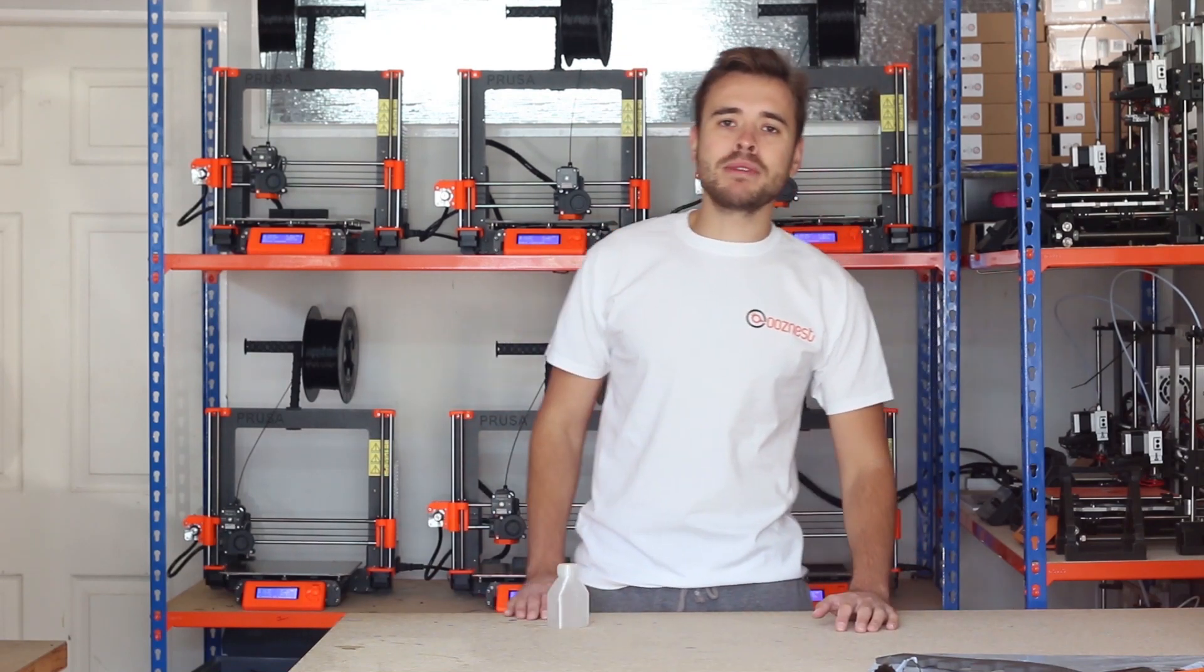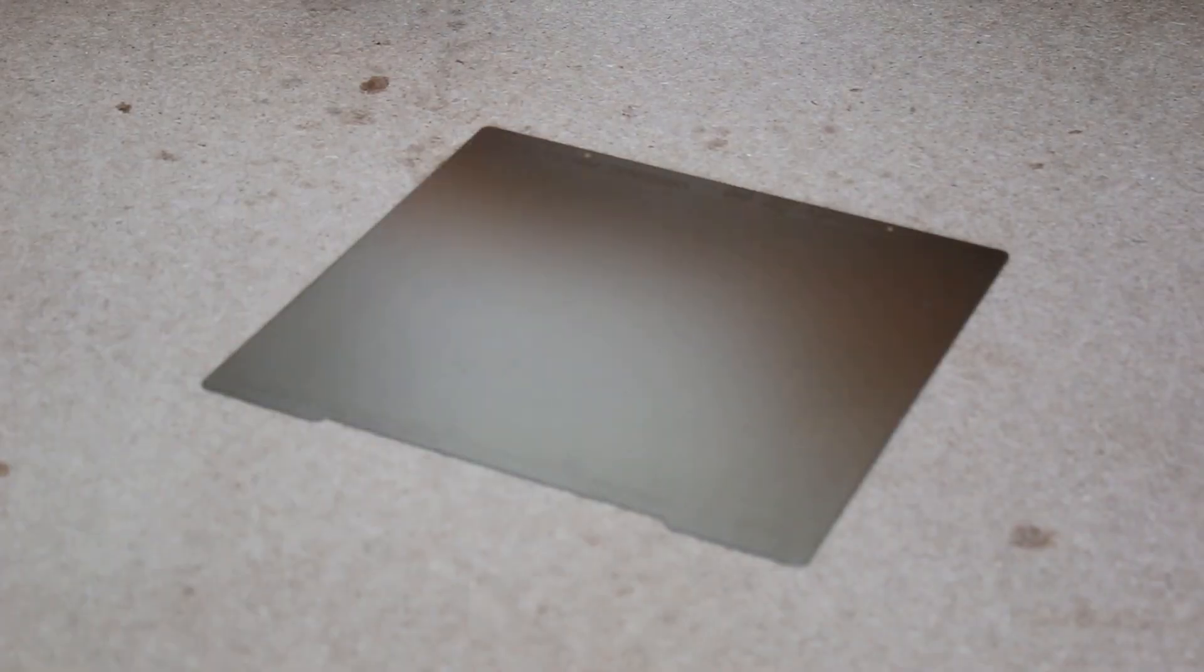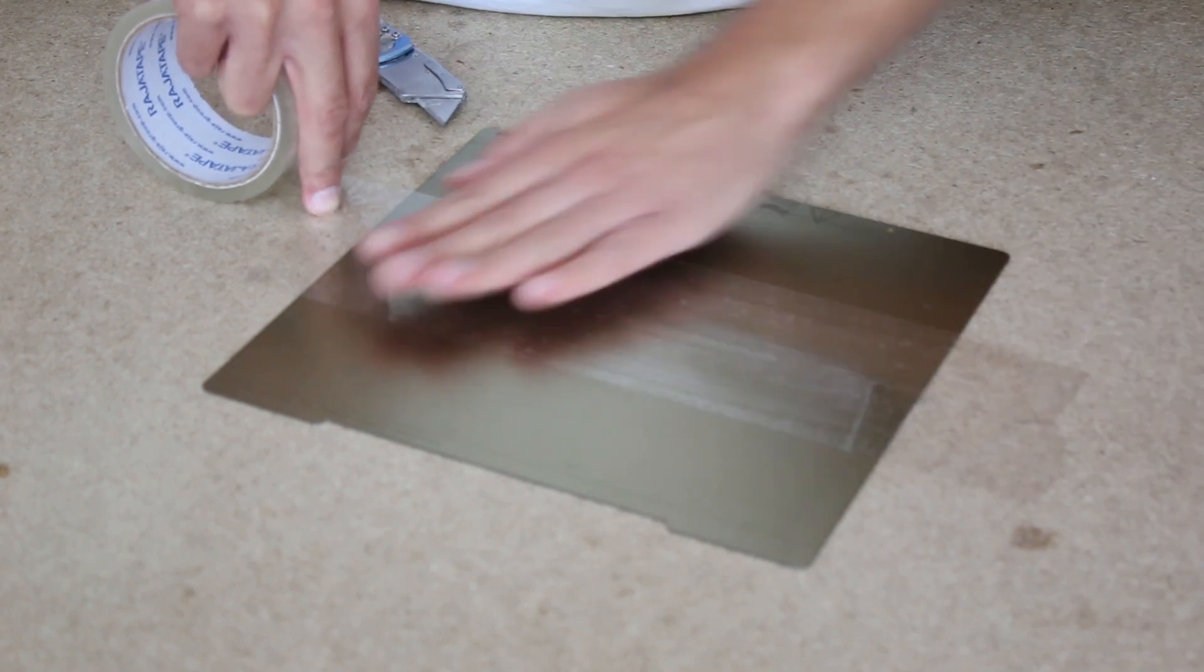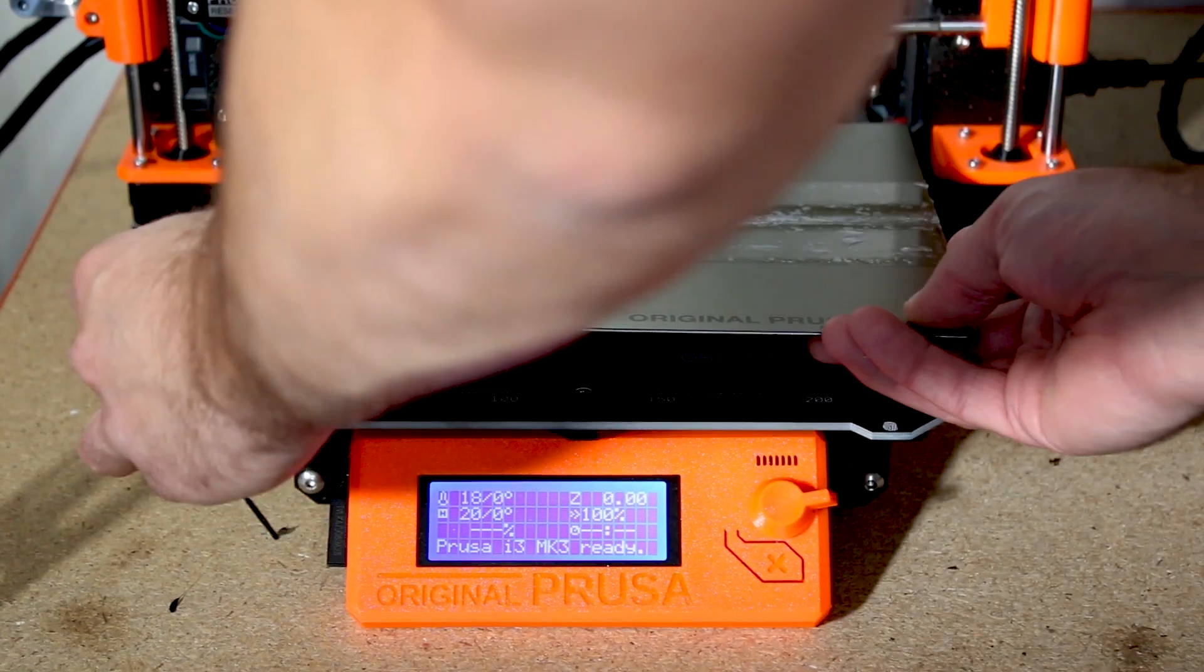Today we're going to do a 3D Printing Makers Minute, and in this one we'll be printing polypropylene. Polypropylene only sticks to itself, so we're going to add some PP tape to a flexible heated bed and cut the edges. Then put the bed back onto the Prusa Mark III.